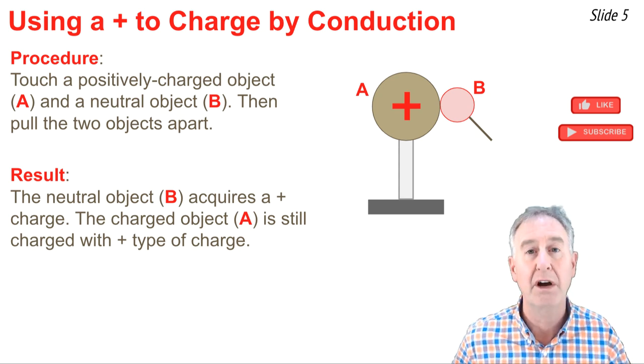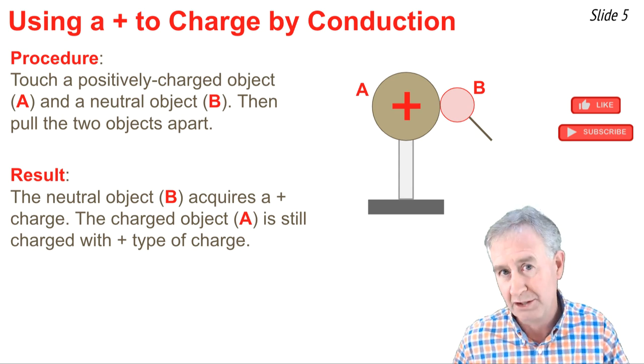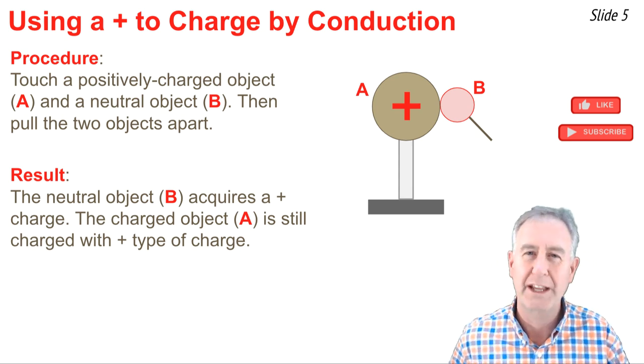So that's the wrong explanation. The second wrong explanation goes like this: Object A transferred positive electrons to object B, and that's a no-no as well. So what is the right explanation?